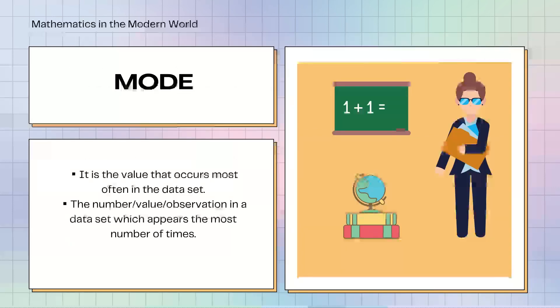Mode. It is the value that occurs most often in the dataset. The number, value, observation in a dataset which appears the most number of times.